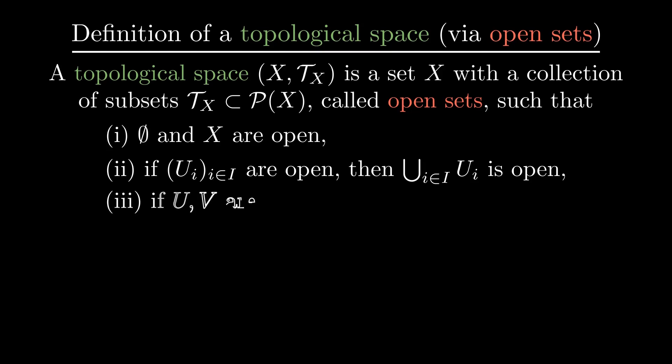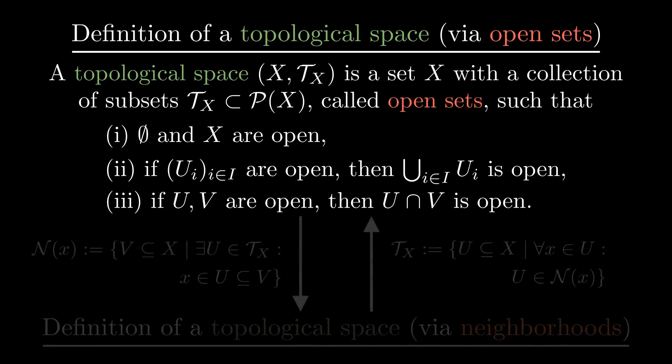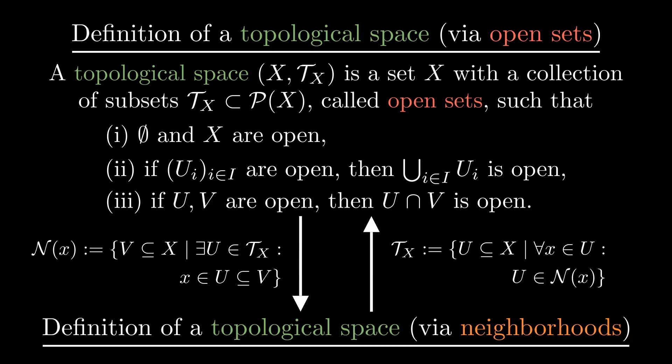The last property is that the intersection of two open sets is open. You can check that the two definitions of a topological space are equivalent.